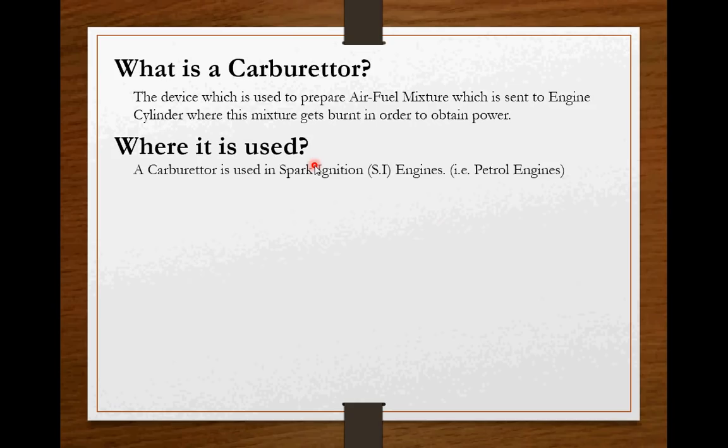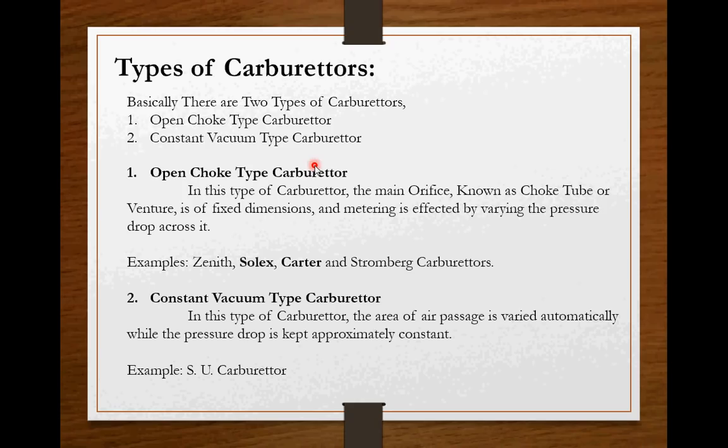Where it is used, a carburetor is used in spark ignition engines, petrol engines. Now coming to the types, there are basically two types of carburetors, first is open choke type carburetor and second is constant vacuum type carburetor. In an open choke type carburetor, the main orifice known as choke tube or venturi is of fixed dimensions and metering is affected by varying the pressure drop across it. Examples of this type of carburetor are Zenith, Solex, Carter and Stromberg carburetors.